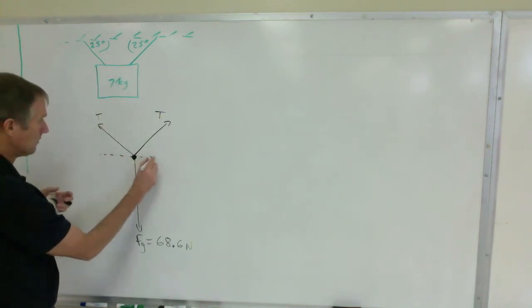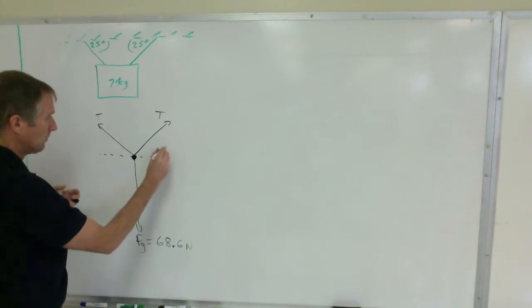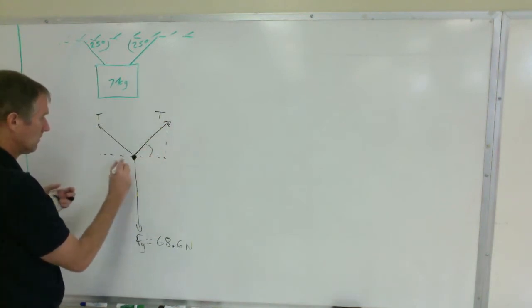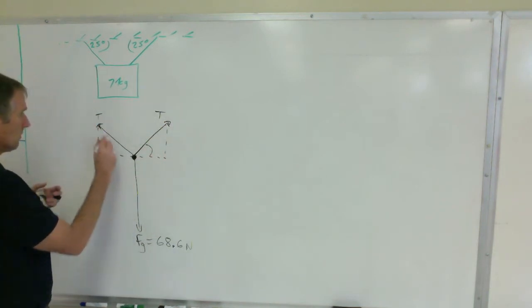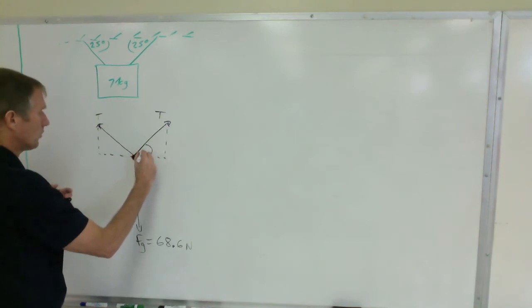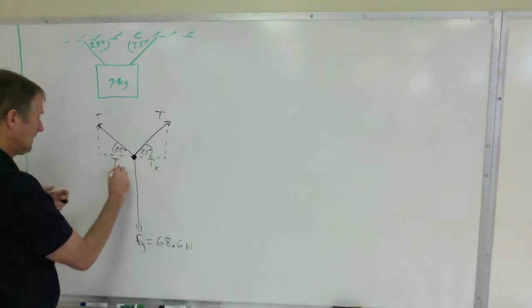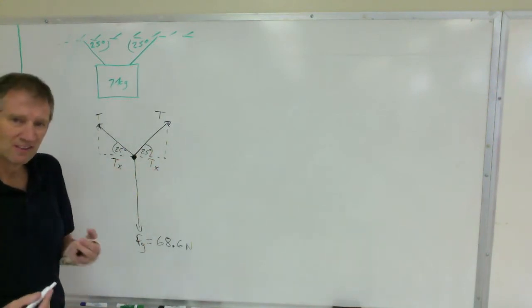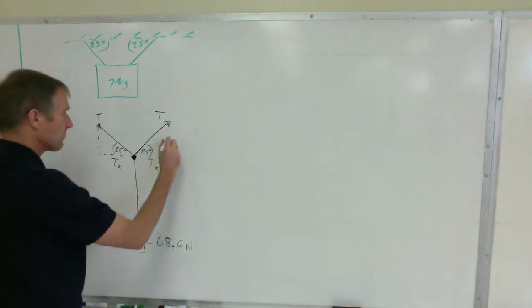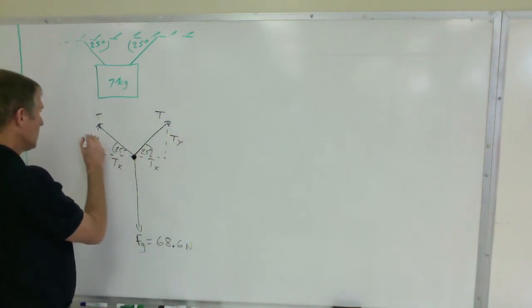So this is where the triangle is up here, you get a triangle here and a triangle over here. That's 25 degrees, 25 degrees. That's Tx and Tx, we don't need to do anything with Tx, it doesn't help us in this question. And this is Ty, Ty.